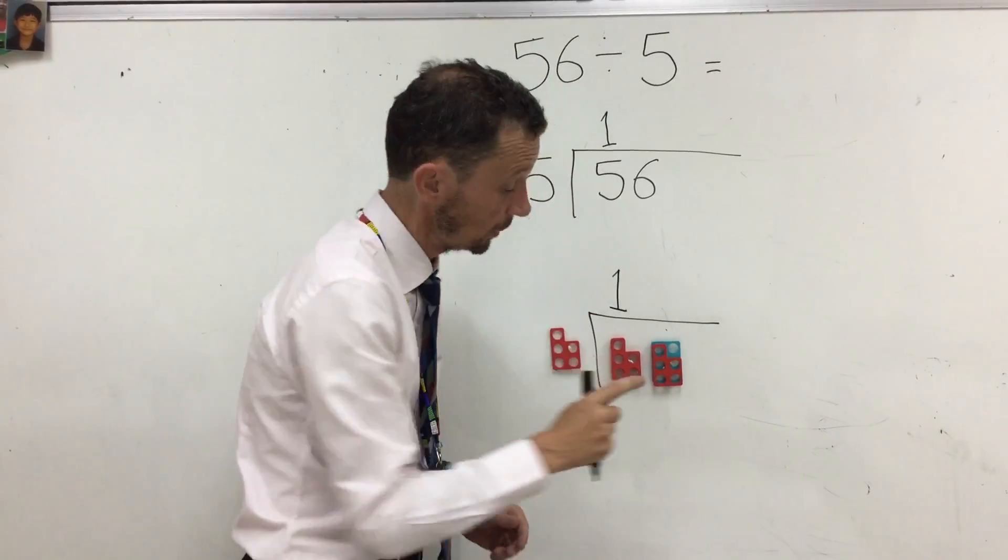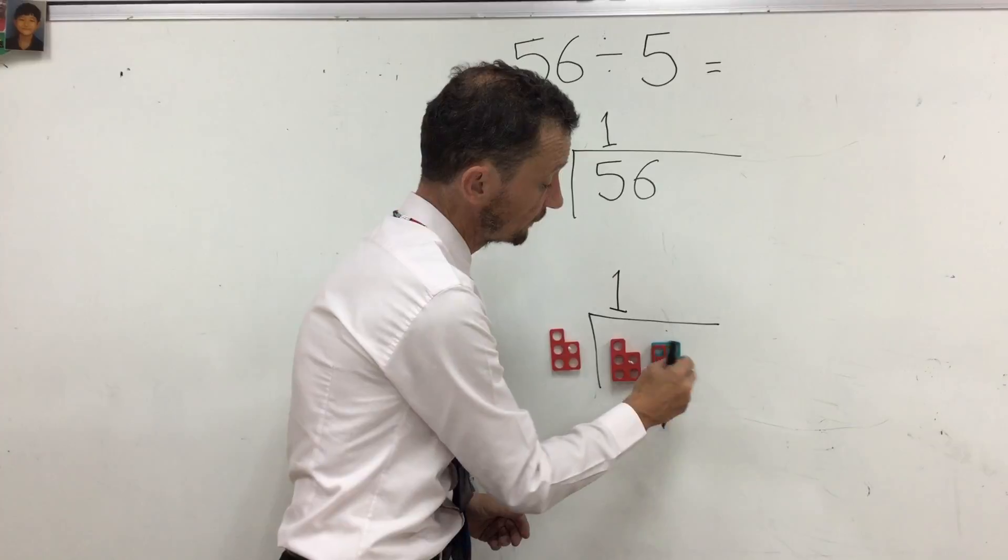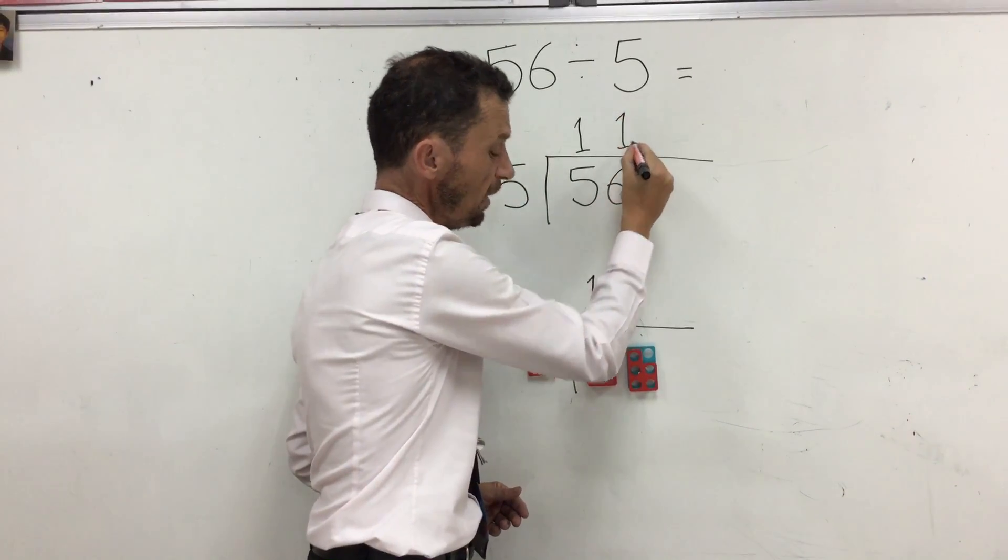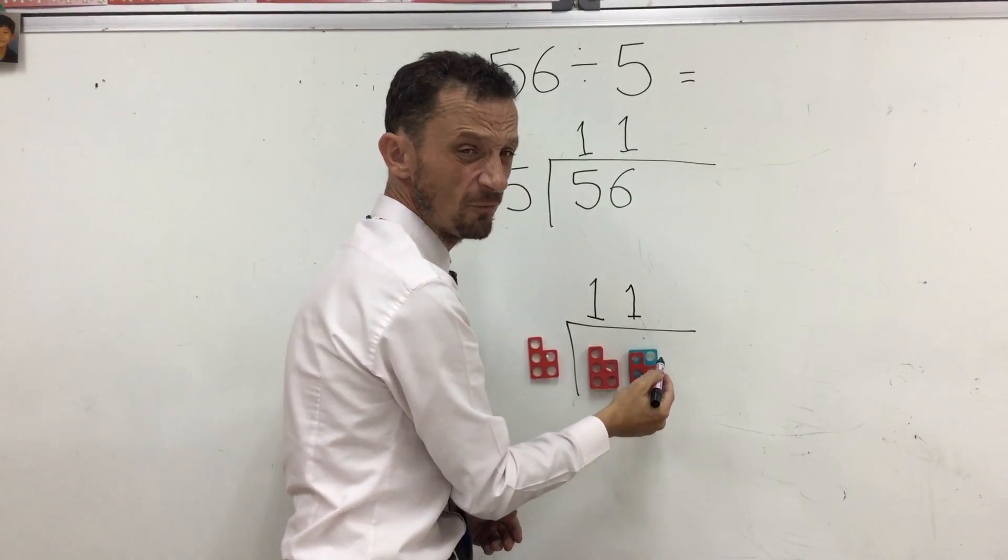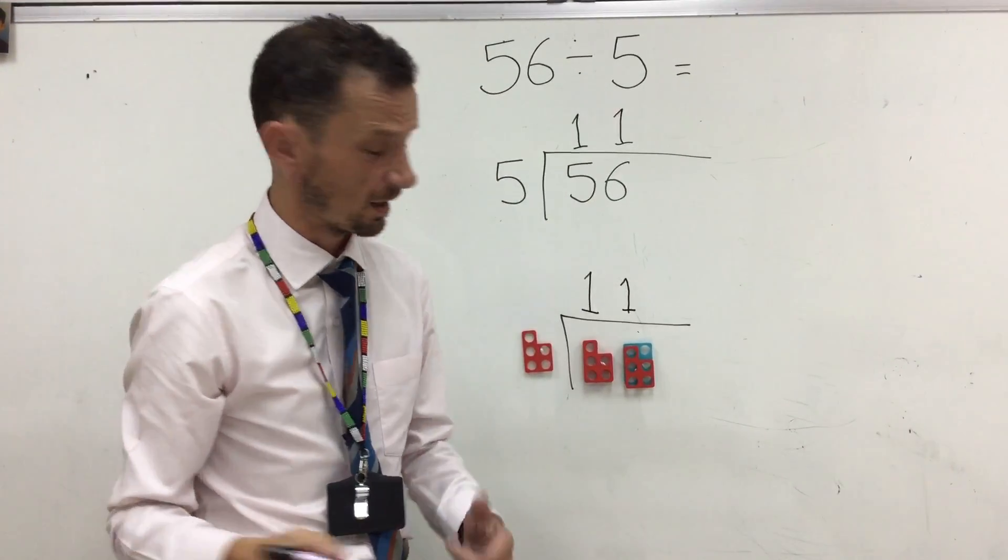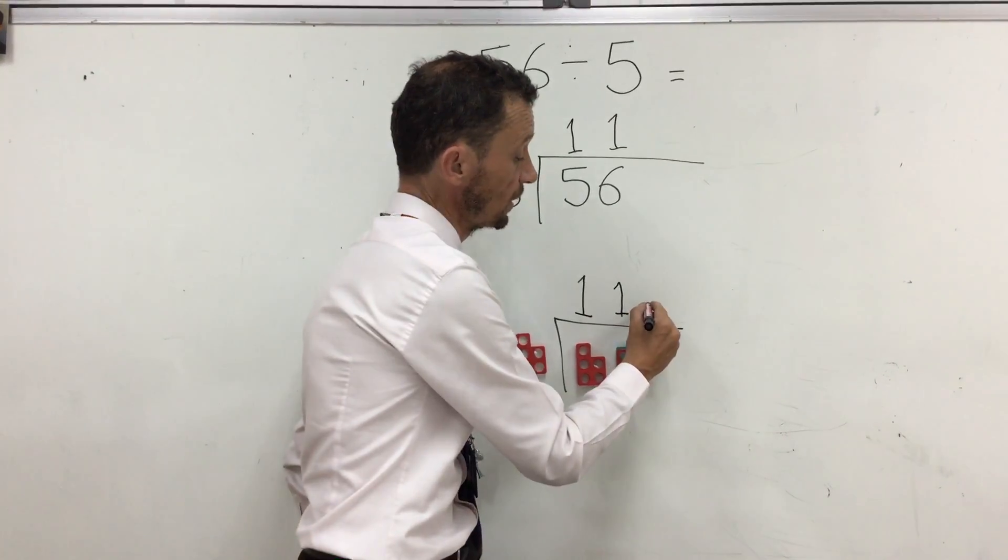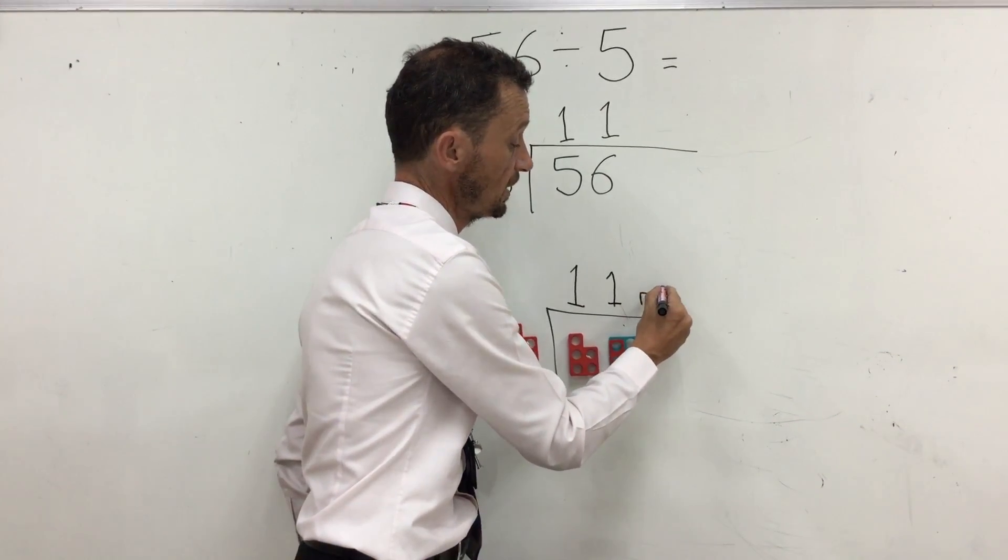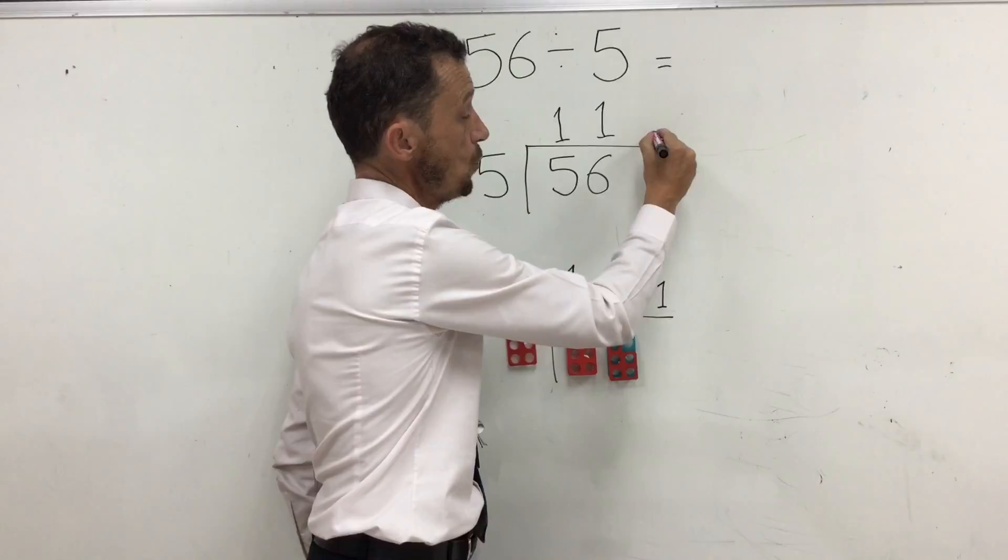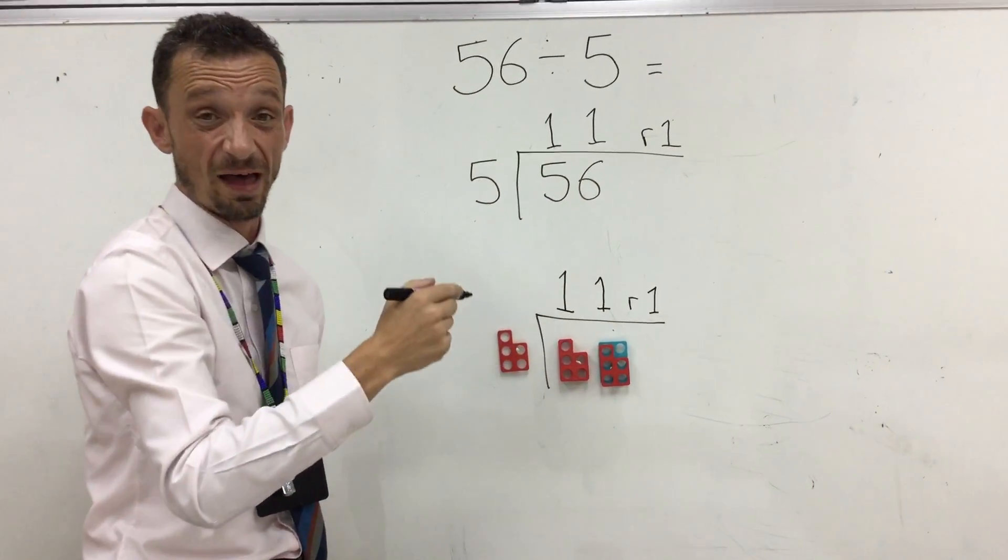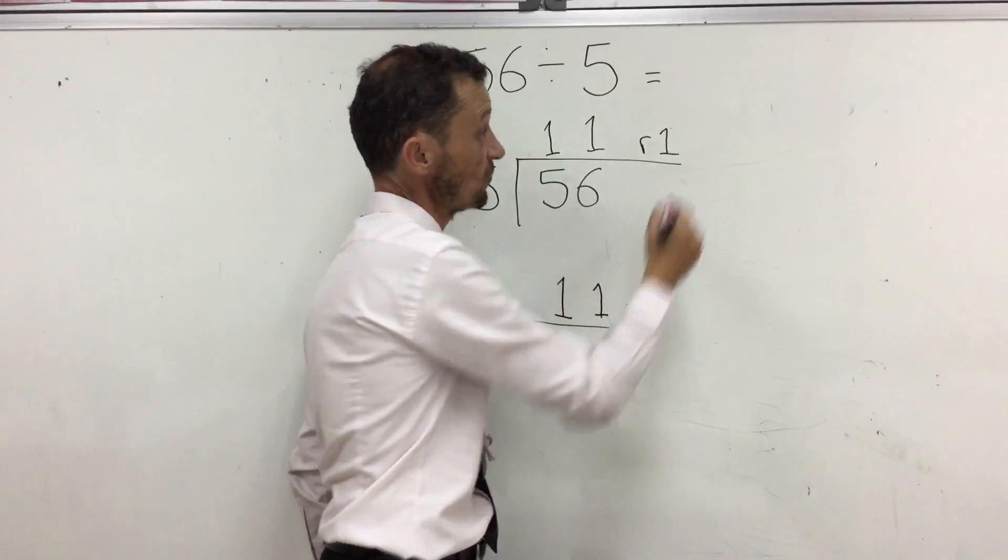I can see that one 5 fits into the 6. But, we're left with some over. We're left with a remainder. Our remainder is 1. So, we do an R for remainder. We put a 1. 56 divided by 5 equals 11 remainder 1.